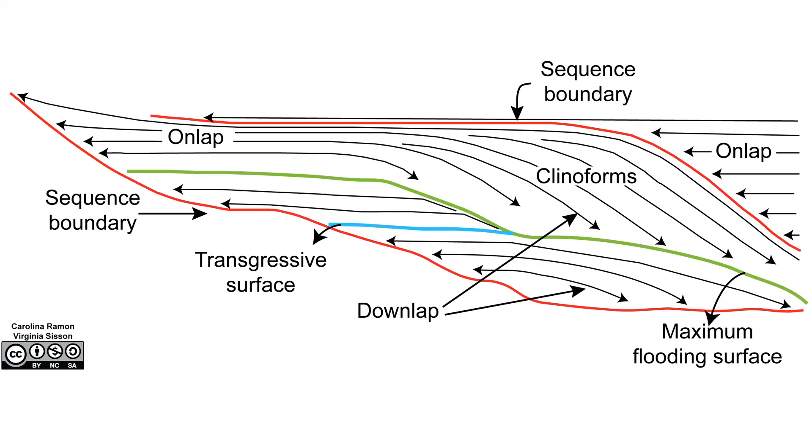And the systems tracts and parasequences are not two dimensional. They are bodies of rock spread out across three dimensions. One must consider spatially how these facies are distributed across large regions.